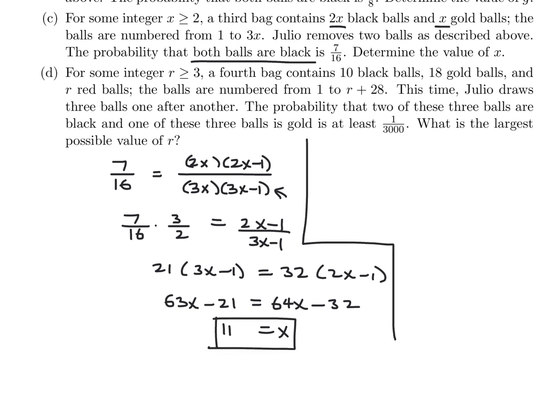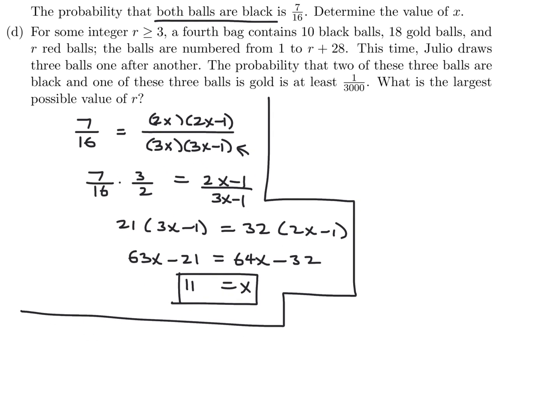And the last one. For some integer R greater than or equal to 3, a fourth bag contains 10 black and 18 gold, and R red balls. The balls are numbered 1 to R plus 28. This time, Julio draws three balls, one after another. The probability that two of these three are black and one is gold is 1 over 3,000. What is the largest possible value of R? So we have 10 black, and we have 18 gold, and we have R that are red. And 1 over 3,000 is the probability of two of these three balls are black, and one of these three balls is gold. So we've got to think about this.